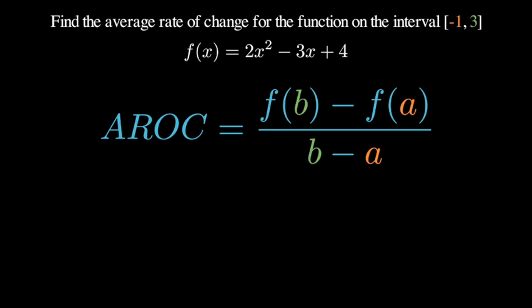Notice I have made the negative one and the a values orange and the b and the three values green. The reason I've done that is to draw your attention to how these are connected to each other.